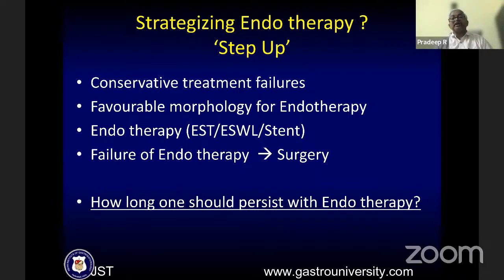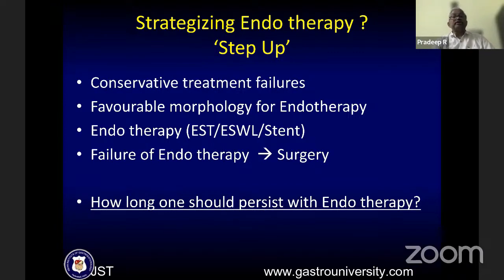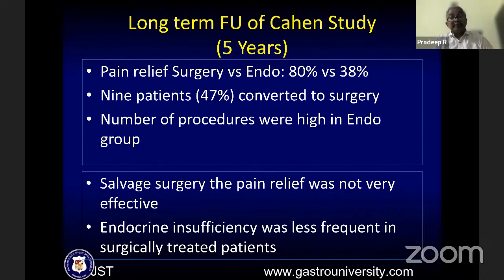When should you refer to a surgeon? Looking at the five-year COIN study data: pain relief with surgery was 80%, but endotherapy only 38%, and roughly half the patients were converted to surgery. The number of procedures required when persisting with endotherapy is very high. Sub-analysis of salvage surgery — where endotherapy had failed — showed pain relief was less effective, and endocrine insufficiency was less frequent in those surgically treated. An important observation is that surgical referral should occur earlier, not after prolonged endotherapy failure.